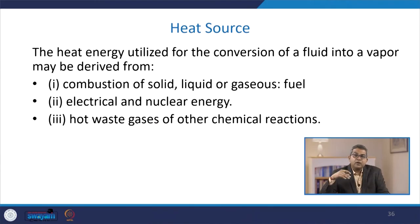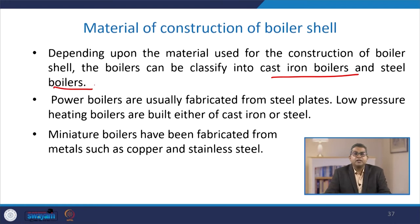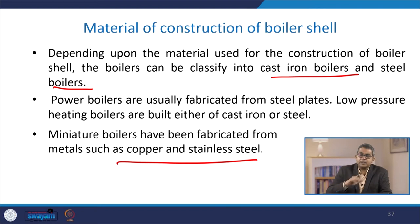Another classification can be given based on heat source. Heat energy utilized for conversion of fluid into vapor can be derived from combustion of solid, liquid, or gaseous fuel, or from electrical and nuclear sources, or from hot waste gases of exothermic chemical reactions. Another classification is based on material of construction of the boiler shell. Boilers can be classified as cast iron or steel boilers. Power boilers are usually fabricated from steel plates, while low pressure heating boilers are built from cast iron or steel. Miniature boilers have been fabricated from metals such as copper or stainless steel.